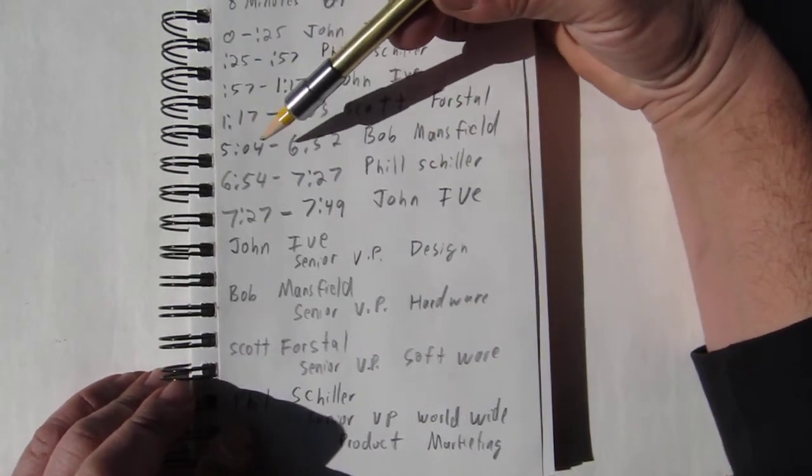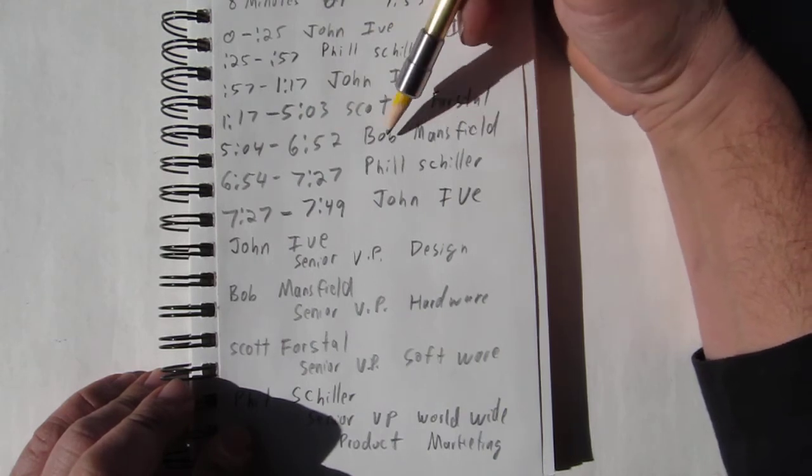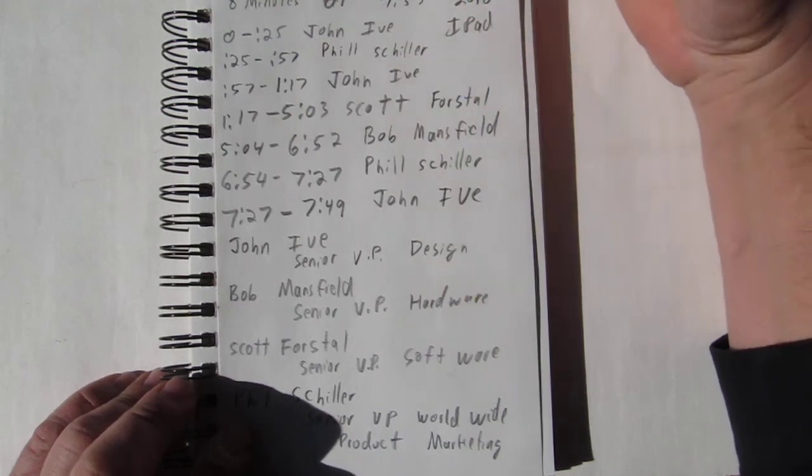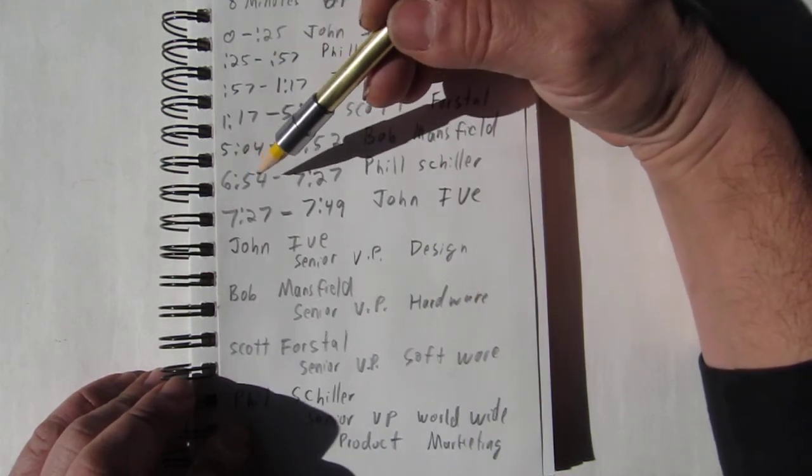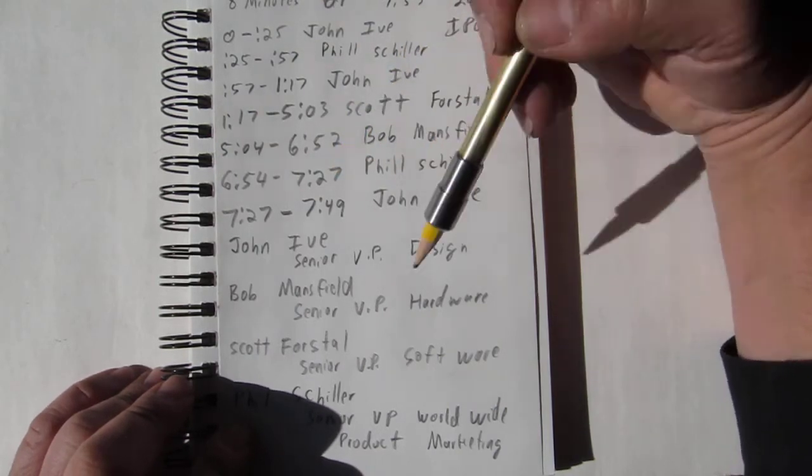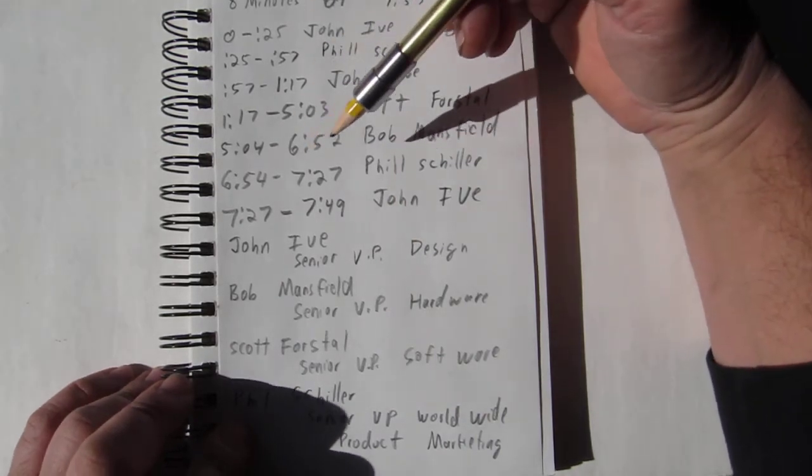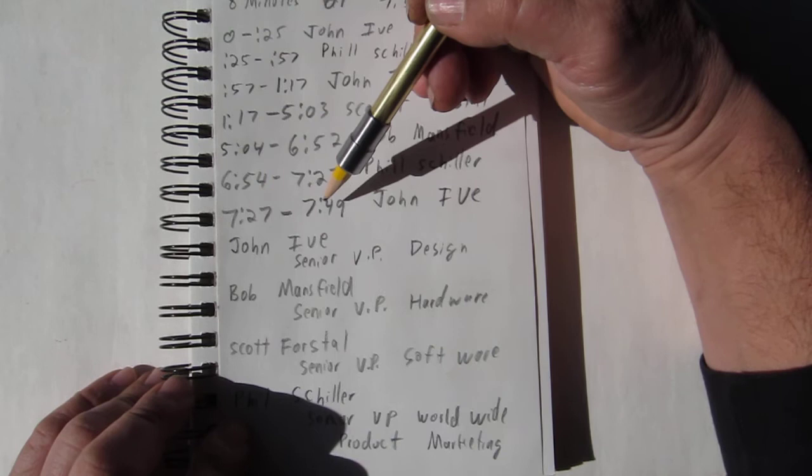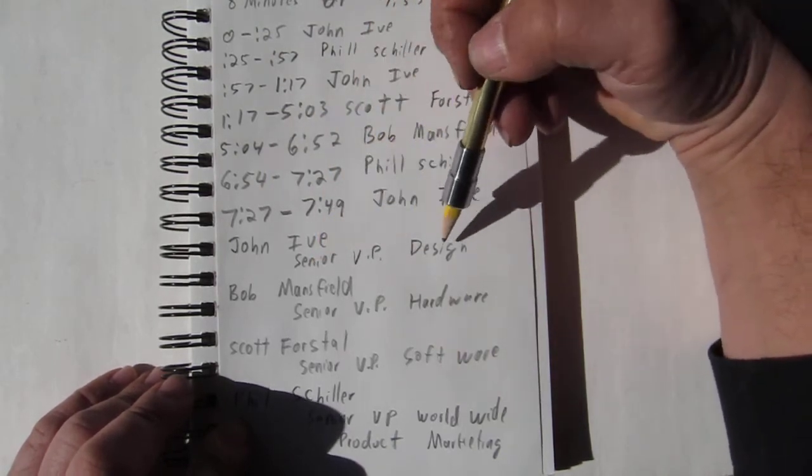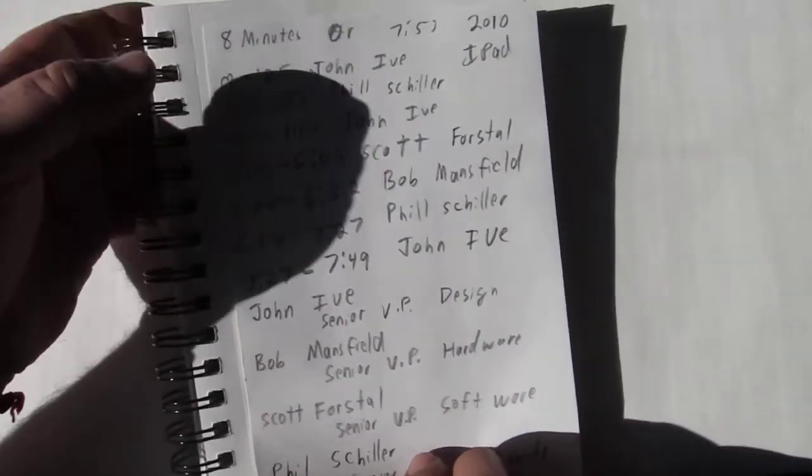From five minutes four seconds to six minutes 52 seconds, we have Bob Mansfield - senior VP of hardware. Six minutes 54 seconds to seven minutes 27 seconds, Phil Schiller once again. Then the conclusion from seven minutes 27 seconds to seven minutes 49 seconds is John Ive - senior VP design. Now you know the times that they spoke.